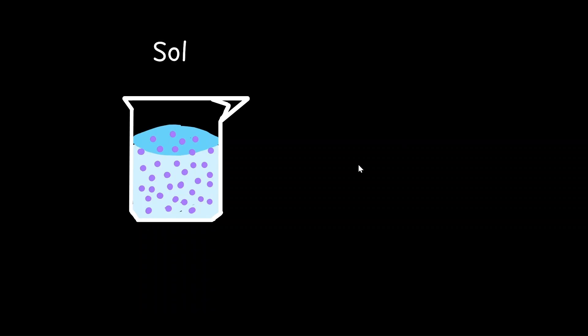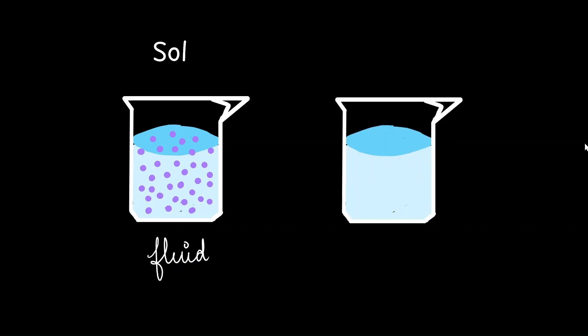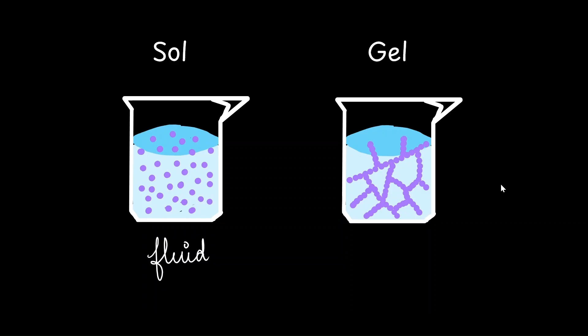To understand pseudopodia and how amoeba moves, we need to know what happens inside the amoeba's body. To do that, we are going to deviate a little from biology and recall something from chemistry. In a colloidal suspension, particles are suspended in a liquid — this is called a sol and it has a more fluid consistency. There is another state where solid particles come together to form a semi-solid substance with properties of both solid and liquid — this is called a gel. Both these states are interchangeable.